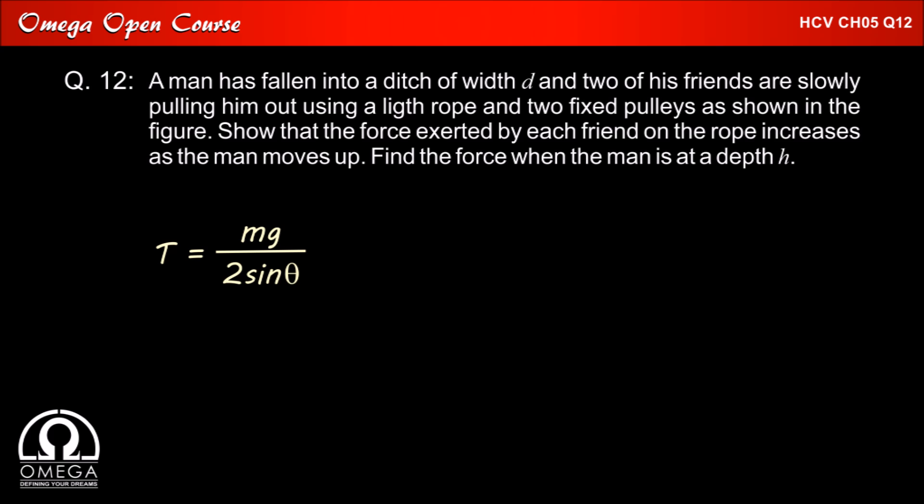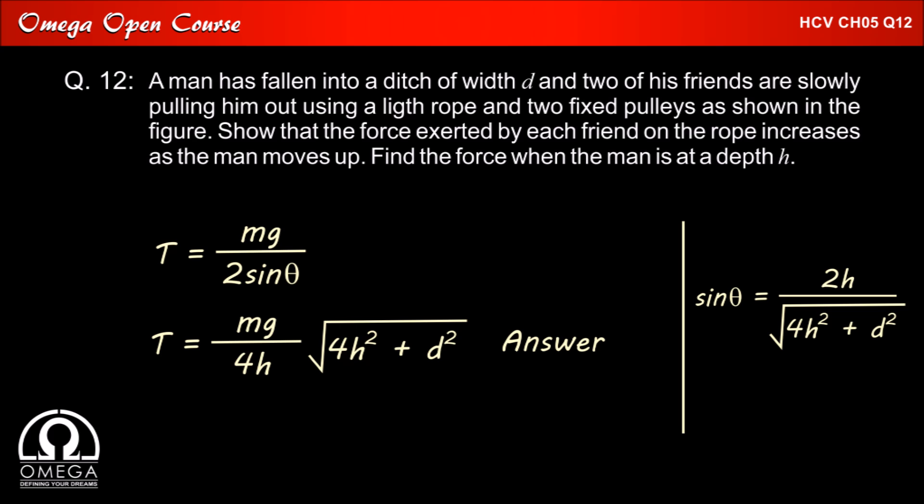Putting the value into the expression, we get tension is equal to mg by 2 sin theta is equal to mg divided by 4h into root under 4h square plus d square, which is the answer.